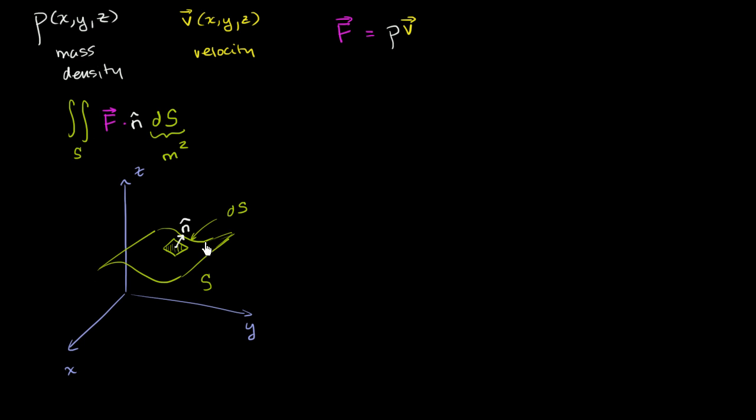And f is defined throughout this three-dimensional space. You give me any x, y, z, I'll know its mass density, I'll know its velocity, and I'll get some f. I'll get some f at any point in three-dimensional space, including on the surface, including right over here. So right over here, f might look something like this. So that is f right at that point. So what does all this mean?